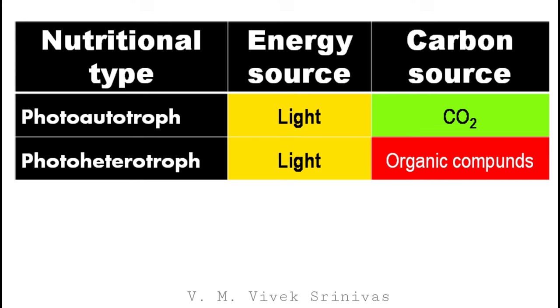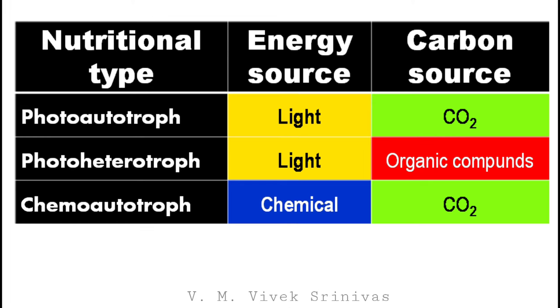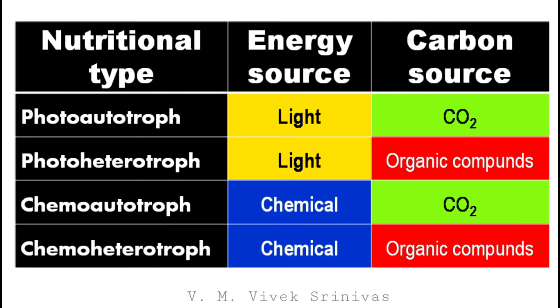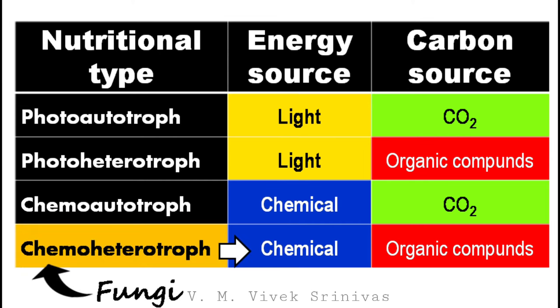Photoheterotrophs use light as a source of energy and organic compounds as a source of carbon. Chemoautotrophs use chemical as a source of energy and carbon dioxide as a source of carbon. Chemoheterotrophs use chemical as a source of energy and organic compounds as a source of carbon. Fungi are chemoheterotrophic organisms.